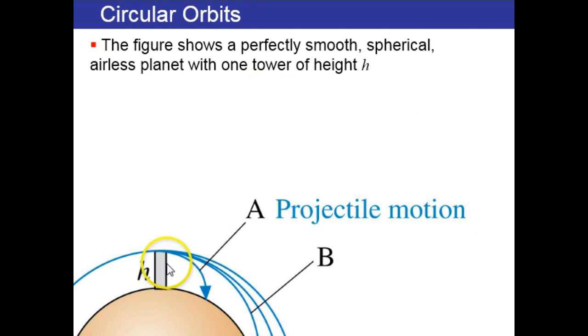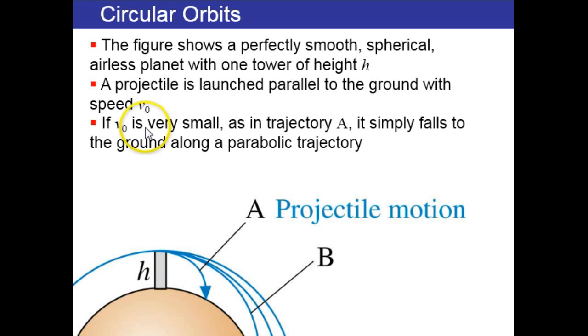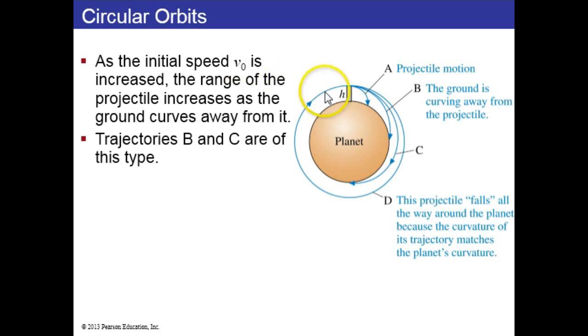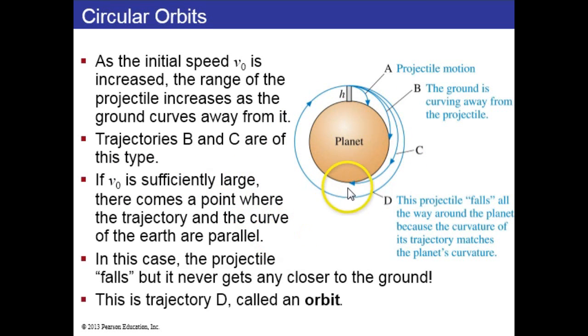Now let's move on to circular orbits. The figure here shows a tower of height h and a projectile which is launched horizontally off the top of this tower at some speed v sub zero. If v sub zero is very small, then you get a trajectory like A. It simply falls to the ground, and that's a parabolic trajectory called the flat earth approximation. Now zooming out, if you increase v, then the range of projectile increases as the ground curves down away from it. Here's curve B faster, here's curve C goes all the way to the other side of the earth. If this launch speed is sufficiently large, you get to this curve D where the trajectory never gets closer to the surface. It's parallel to the surface of the ground. That's called an orbit.